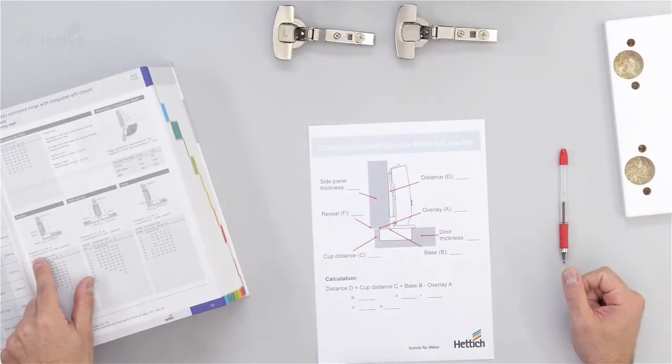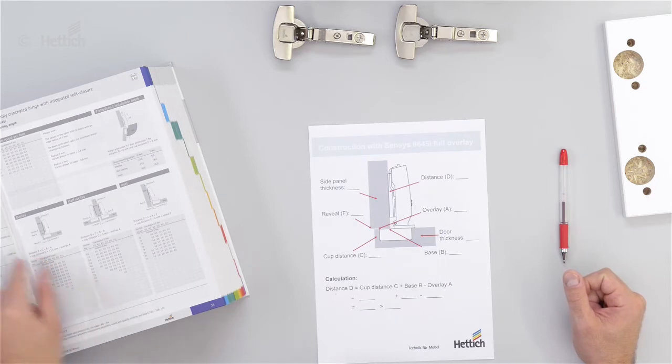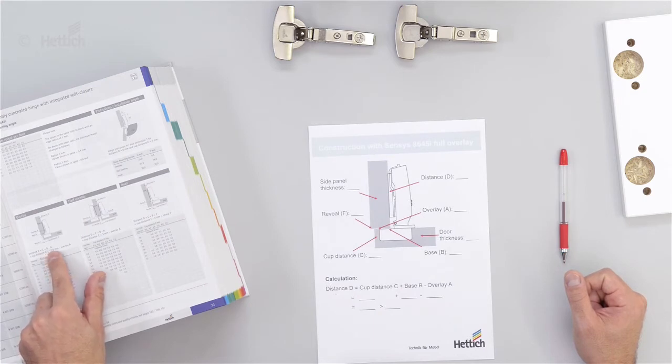The formula to calculate the mounting plate distance is here on the opposite side. Distance D equals C plus B minus A.